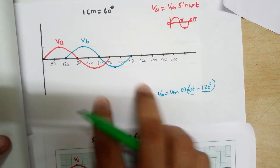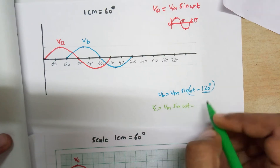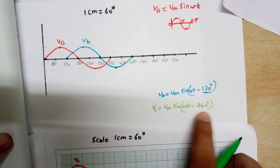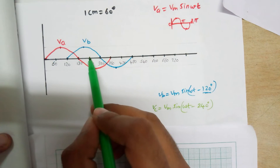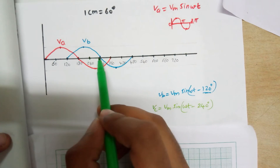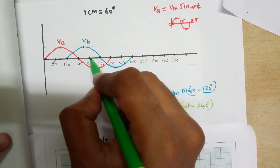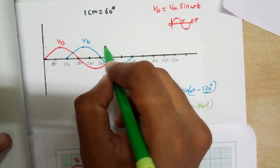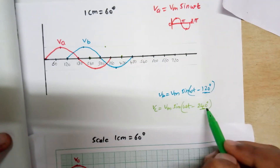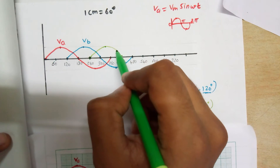Now Vc. Vc equals Vm sin(omega t minus 240 degrees). So we need to start the wave from 240 degrees. Then the top part will conduct for 180 degrees. The top part will start from 240 degrees and the peak point will be after 1.5 cm, then the top part ends after 180 degrees.